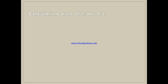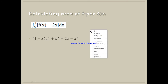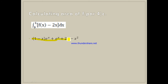Back to the PowerPoint: calculating area. The integral from 0 to 1 of f(x) − 2x dx equals the integral of f(x) — which we already have from the antiderivative in the first part — minus the integral of 2x, which equals −x².